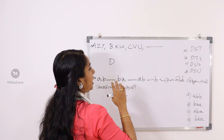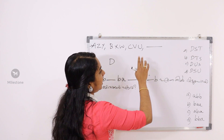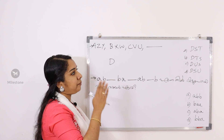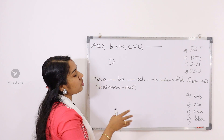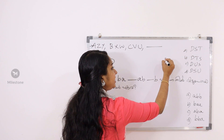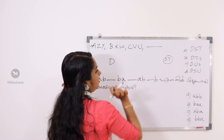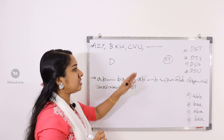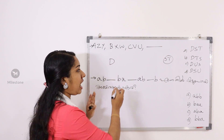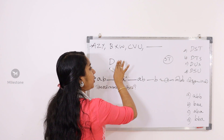UVWXYZ. A, B, C, D, E, F, G, H, I, J, K, L, M, N, O, P, Q, R, S, T, UV. S is T — that's it.